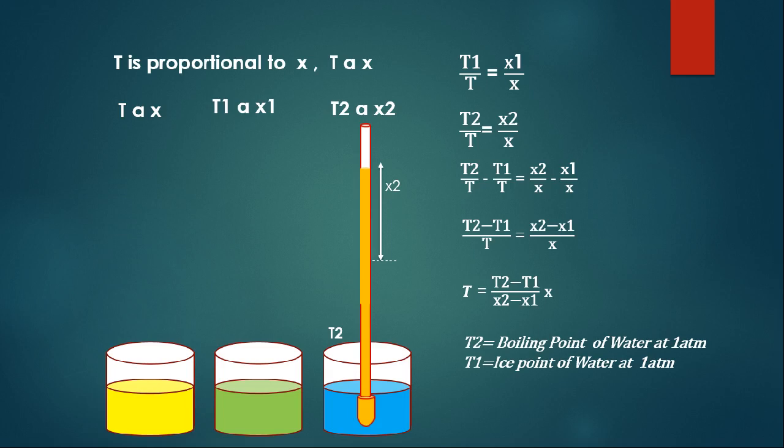The temperature at the ice point I fix as 0 degrees Celsius. So T2 is 100 and T1 is 0 degrees Celsius. I can measure the thermal expansion using a scale — taking some example values, say X2 equals 50 and X1 equals 30.